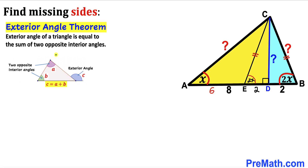According to the exterior angle theorem, the exterior angle of a triangle equals the sum of the two opposite interior angles. In our diagram, the angle at C is the exterior angle, equal to angles A plus B. So if angle A is x and we apply this, the exterior angle becomes x plus x, which equals 2 times x.